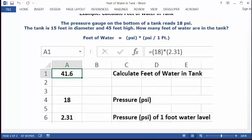So you go to a blank spreadsheet. Put your cursor in C1 and type calculate feet of water in a tank. And you can put your cursor in A1. You can set it as whole numbers.